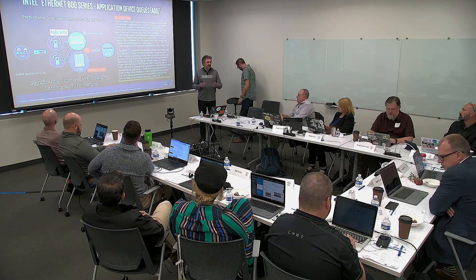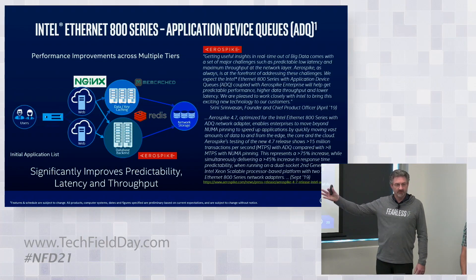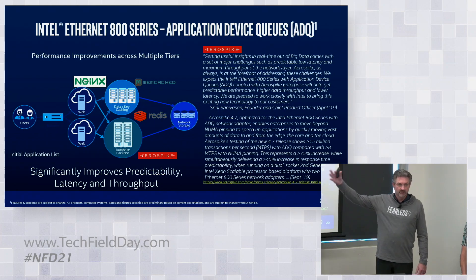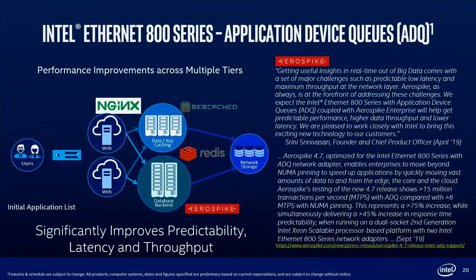The configuration for each one of the applications — we're doing a lot of research. As mentioned prior to Paul coming up, there are some applications we're focused on primarily for cloud applications currently: Aerospike, Redis, Memcache, and NGINX being the primary ones we're working with right now.